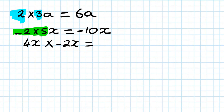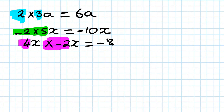Next one: 4x times negative 2x. So 4 times minus 2 - a negative times a positive gives a negative - and 4 times 2 is 8. Then x times x: x times x is x squared. So the answer is negative 8x squared. Just do one step at a time.